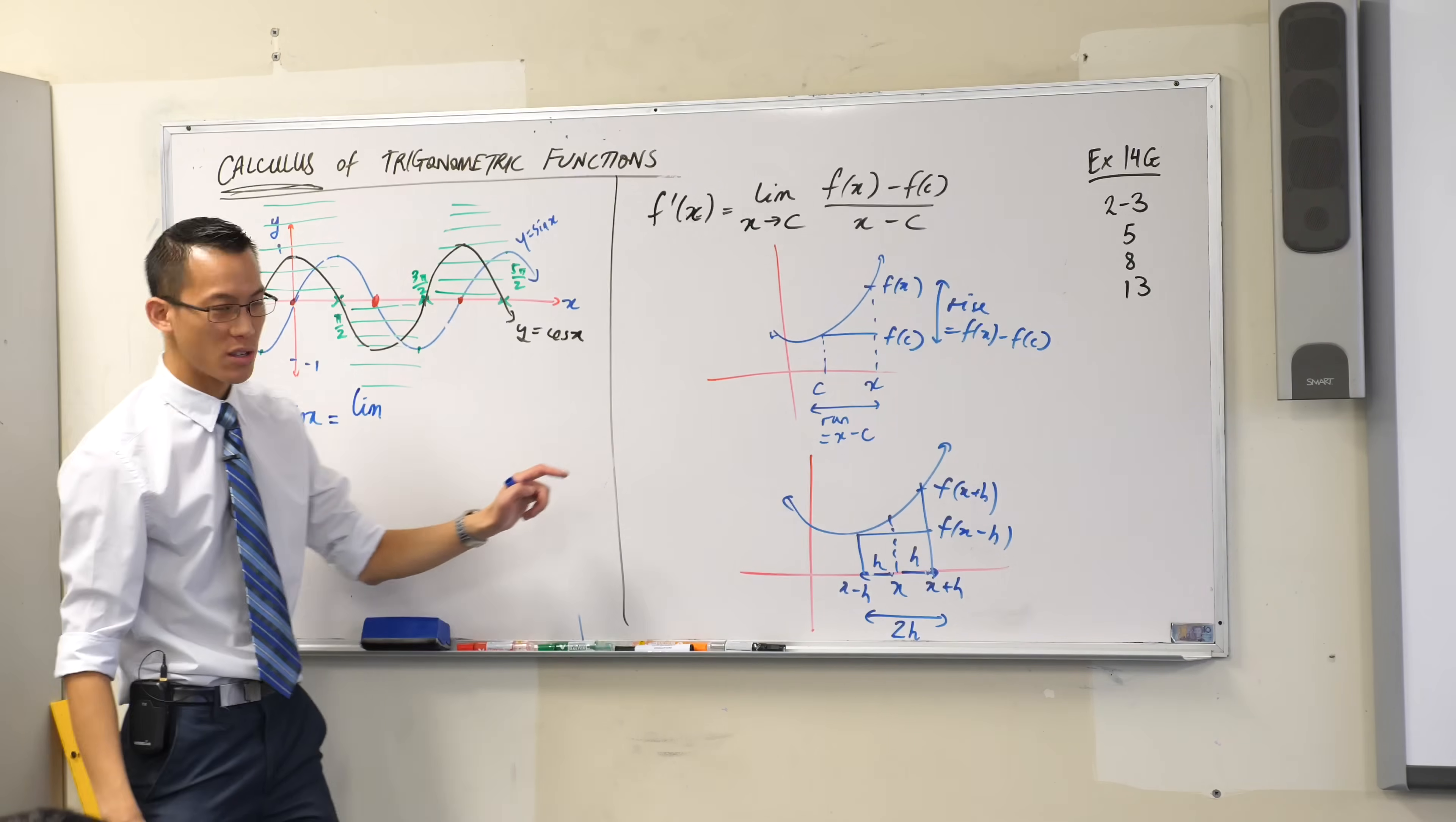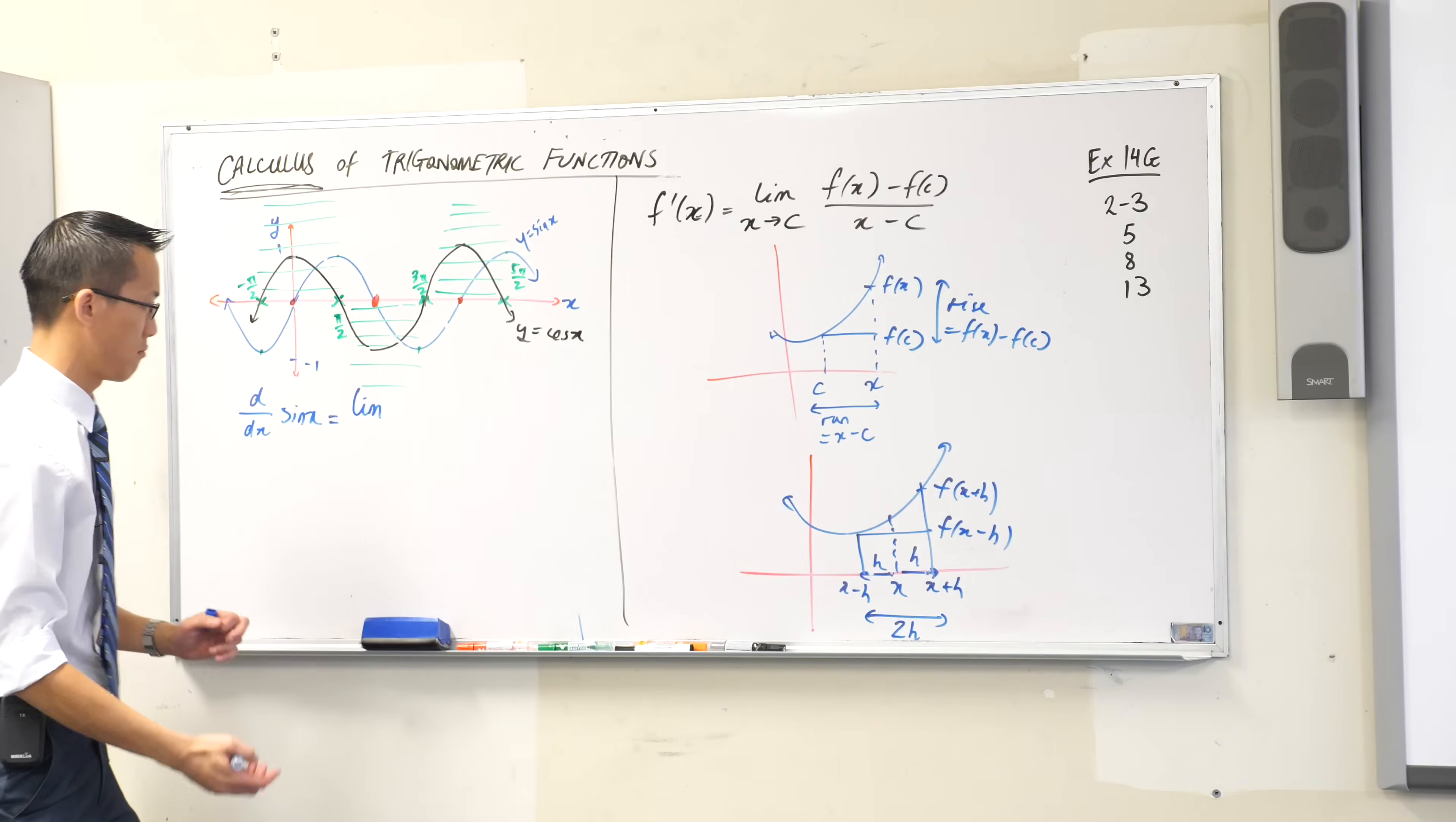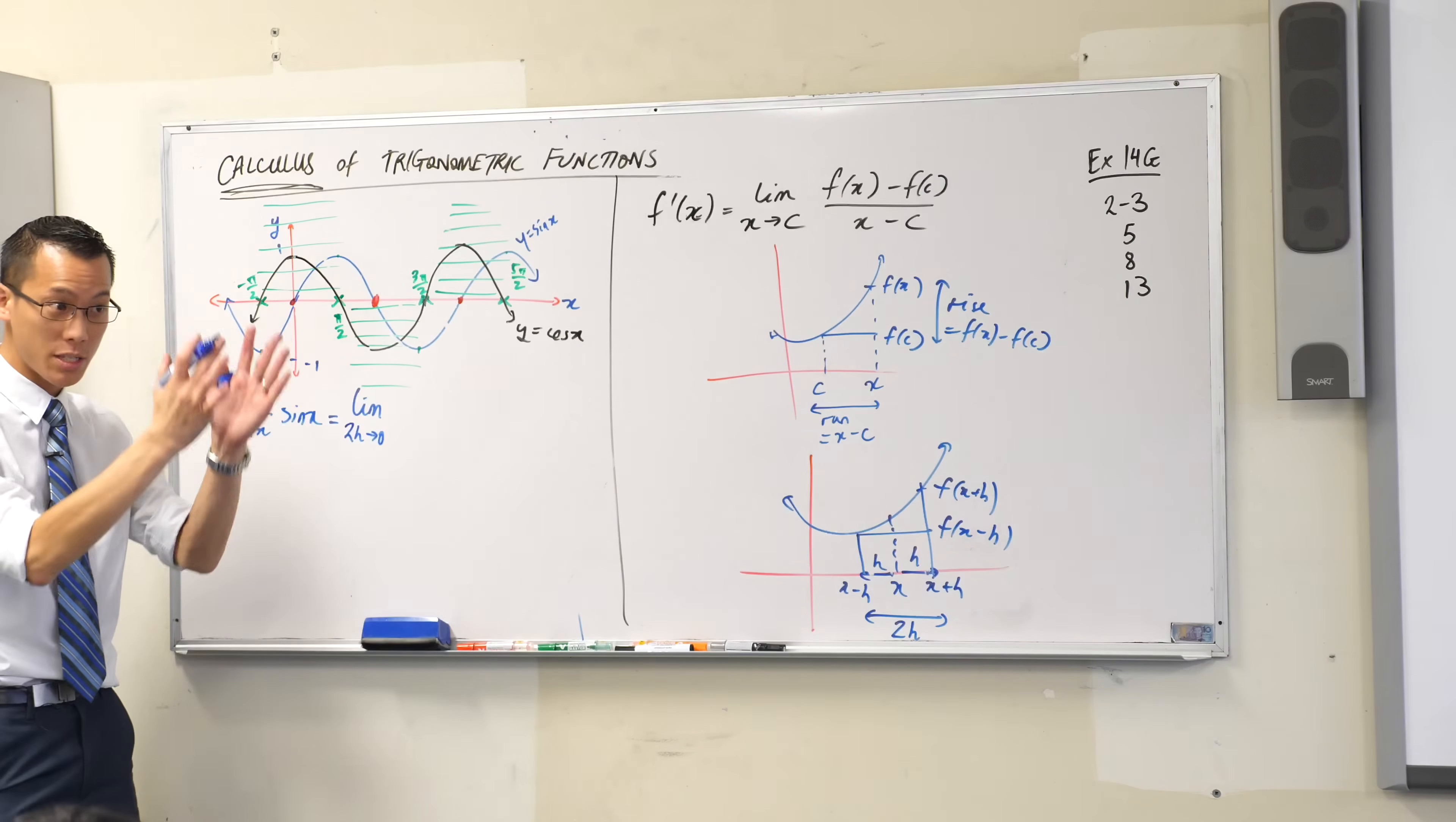Limit. As I want the run to get really small, right? So what's the run in this case? It's 2h. Is that okay? I want it to get really small.